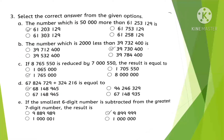Question 3: Select the correct answer. The number which is 50,000 more than this number — we add 50,000, option A is correct. The number which is 2,000 less than this — we subtract 2,000, this option is correct. If this amount is reduced by this amount, the result equals this — the third option is correct.